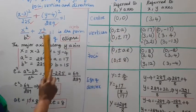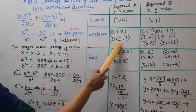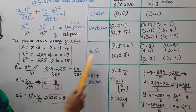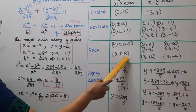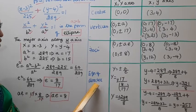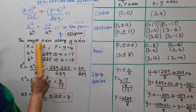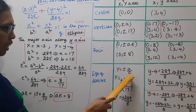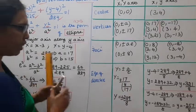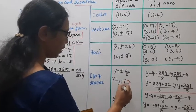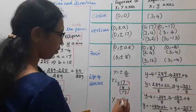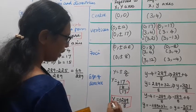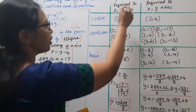Foci: 0, ±ae where ae = 8. Equation of directrices: major axis along Y axis, y = ±a/e = ±17/(8/17) = ±17×17/8 = ±289/8.